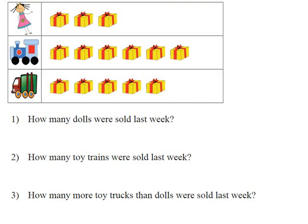Before we start with the questions, let's quickly look at the doll. Let's count the gifts by the doll: 1, 2, 3. By the train: 1, 2, 3, 4, 5, 6. And then by the truck: 1, 2, 3, 4, 5. Now we've written our numbers down so that will make it easier for us to answer our questions.